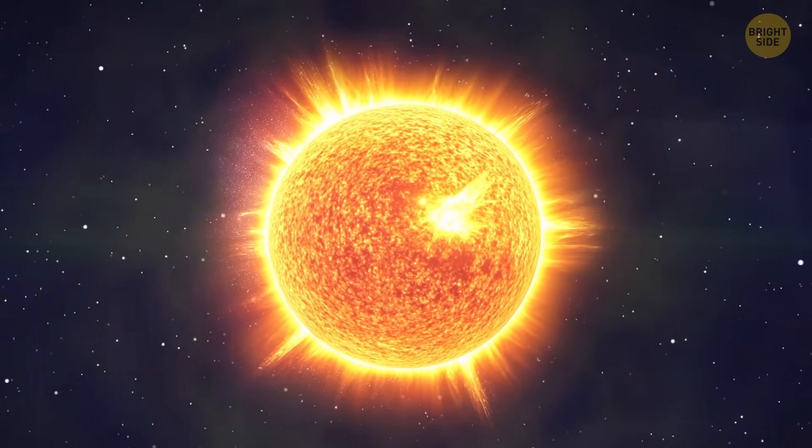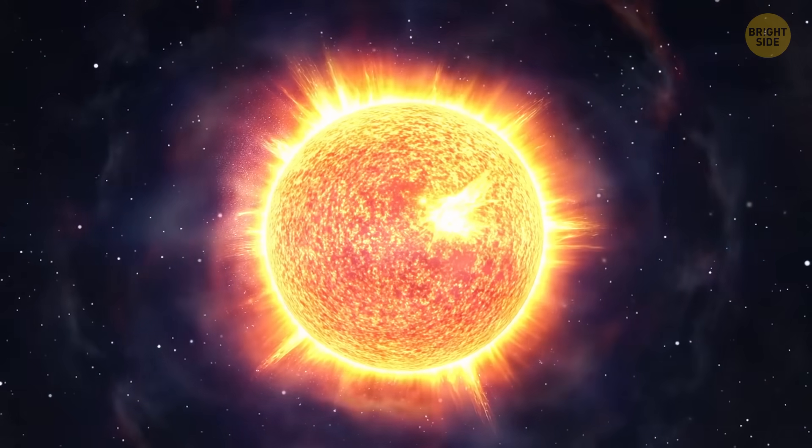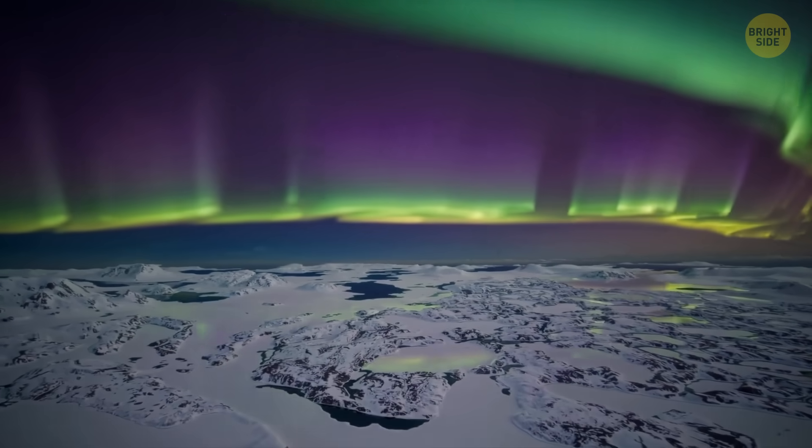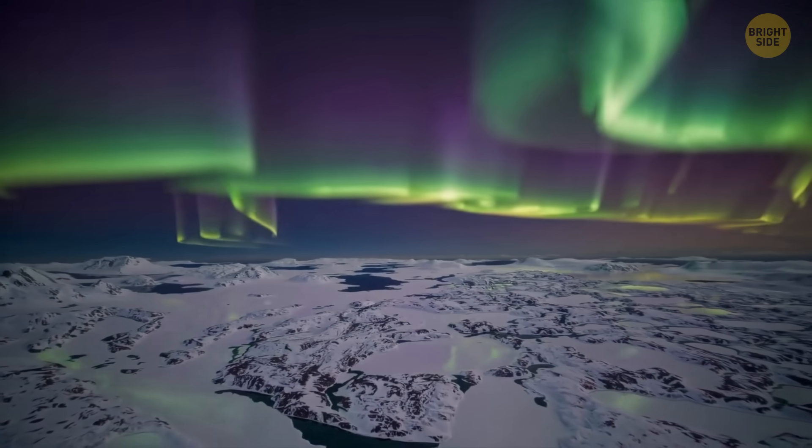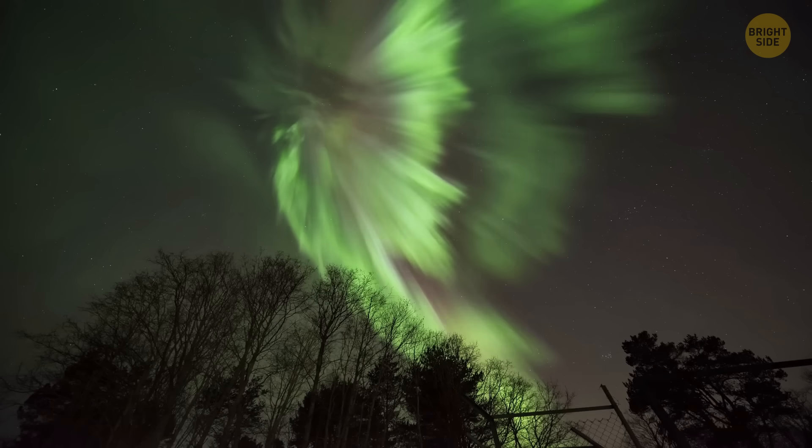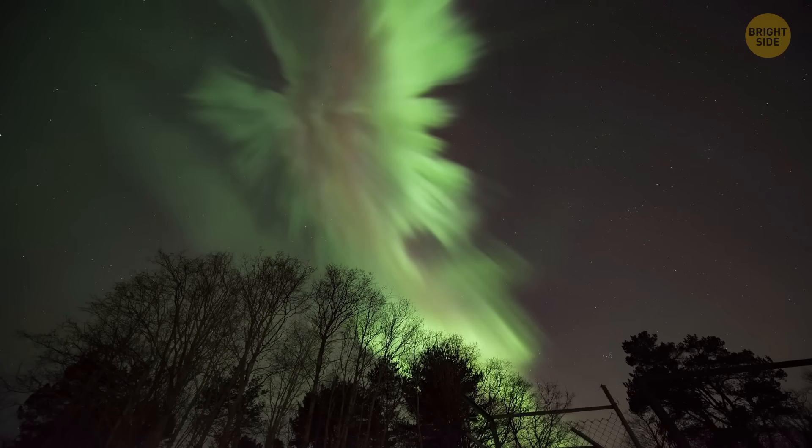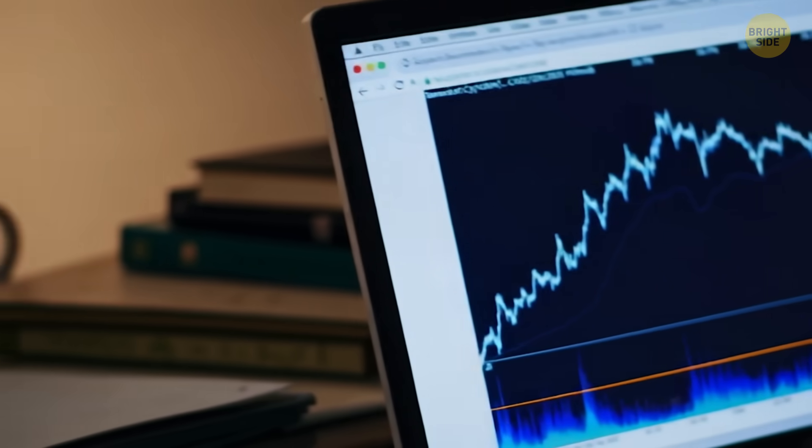Back in May 2024, it hit us with one of the craziest geomagnetic storms in 500 years or so. And yes, that means super bright auroras lighting up skies all over the world, even in places that usually only get clouds and vibes. But the scariest thing? This wasn't supposed to happen.